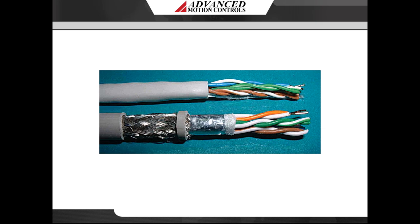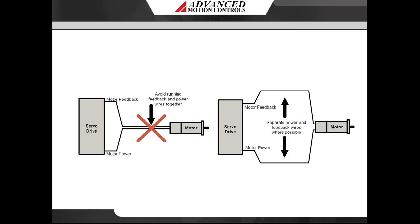Use of a twisted shielded pair for the feedback wires is recommended. Ground the shield at one and only one point — the drive chassis ground. The motor power wires are a considerable source of noise and the feedback wires are susceptible to receiving it. Placing signal cables next to power cables can allow PWM switching noise to couple from power lines onto the adjacent signal lines. To avoid this, route the motor power wires and motor feedback wires in separate cable bundles and far apart. As the distance between the lines increases, the effect of inductive coupling is reduced.